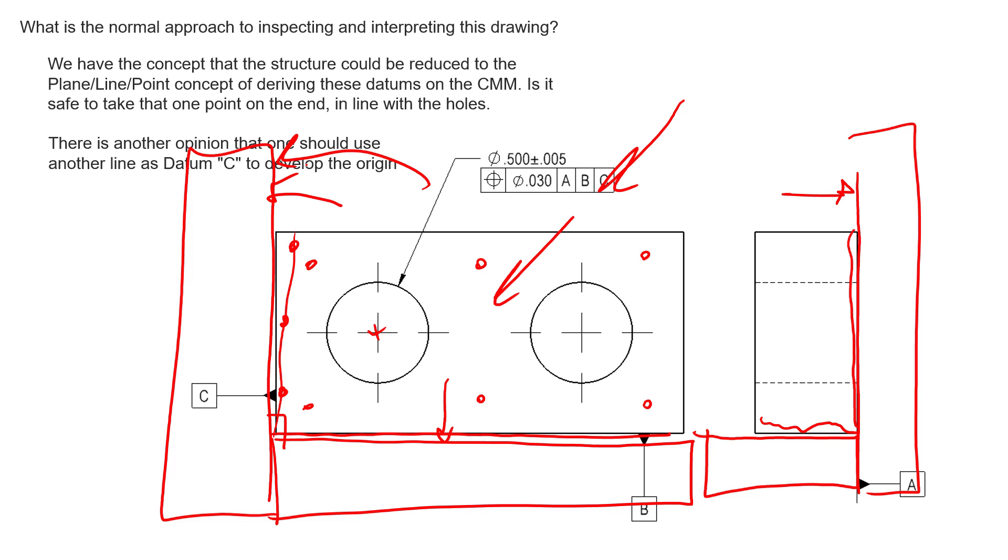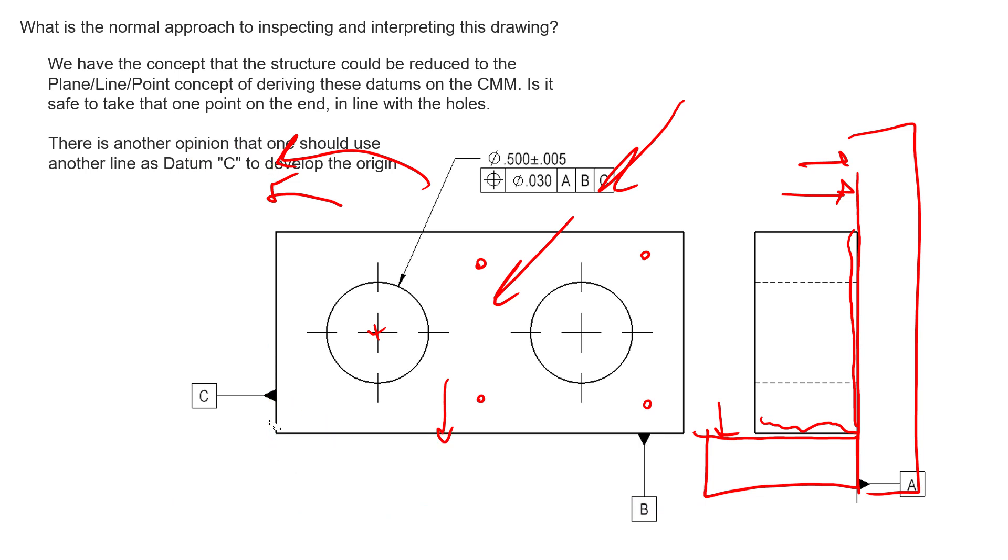Without worrying about how many points we should take on the CMM. If we construct a plane, point, or line, we know that we take three points on those surfaces. We zero our metrology equipment out on those surfaces. How much orientation error that can go into these features is left undefined on this drawing.